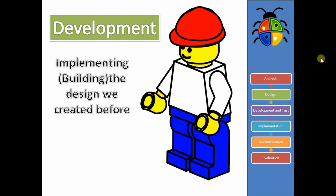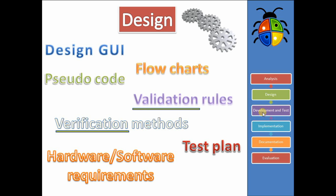So if we designed the database, then we're going to develop the database at this point. If we jump back to our design section, we'll see that we have to create things like our GUI — our graphical user interface — our flowcharts we'd have to put into practice, our pseudocode, which is our kind of temporary English language structure of our programming language. This will be changed into actual code at this point.